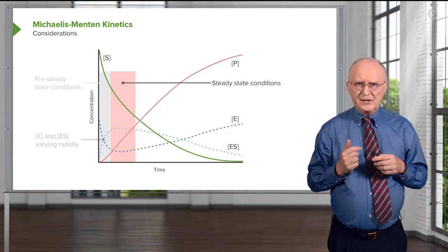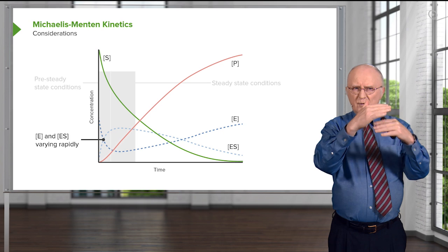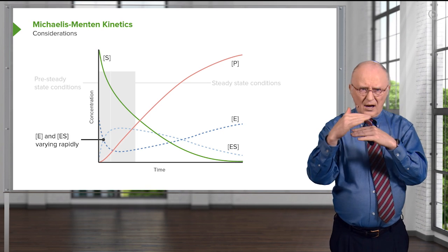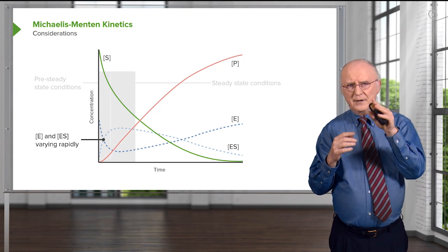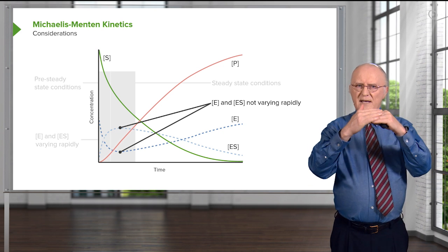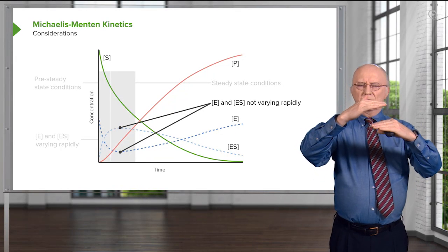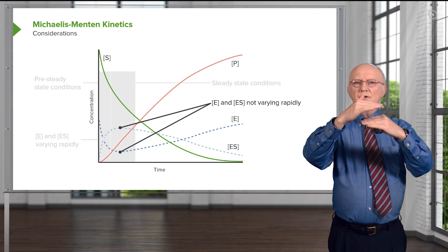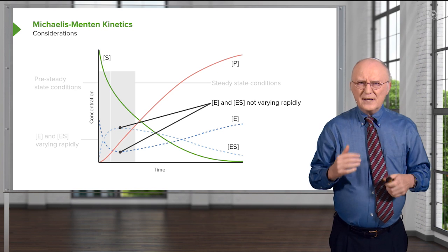And that's very important for our consideration. So, we can see, for example, that in that early state, the concentration of free enzyme and ES complex are changing. The concentration of E is falling very rapidly, and the concentration of ES is rising very rapidly. However, under steady state conditions, as we can see here, they have started to flatten out. They're not exactly linear, but they're much closer to linear than they were in that pre-steady state condition.